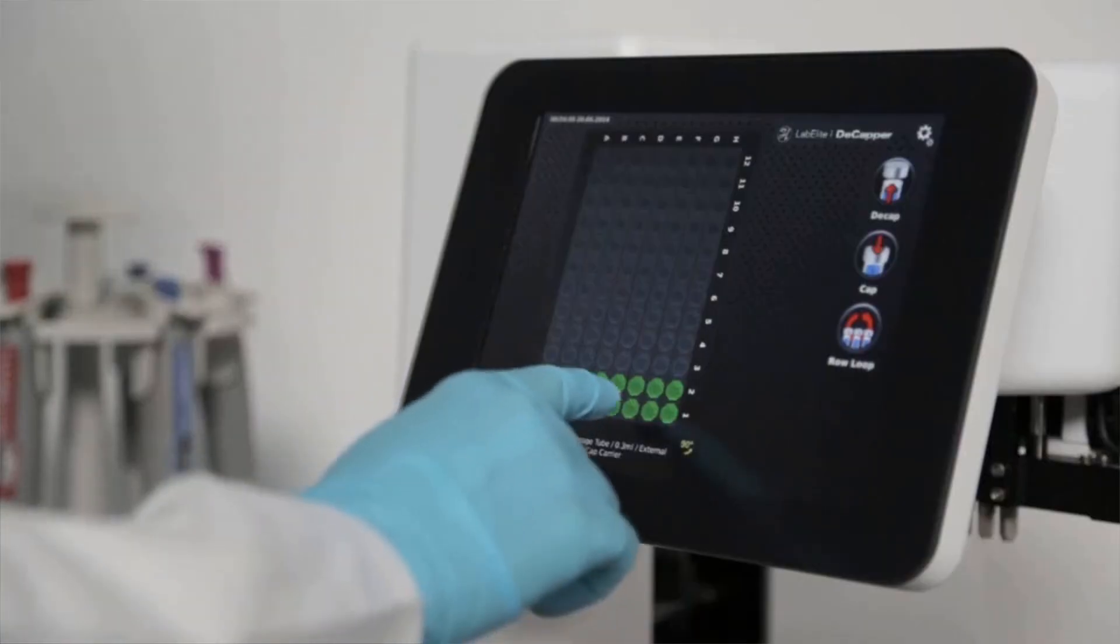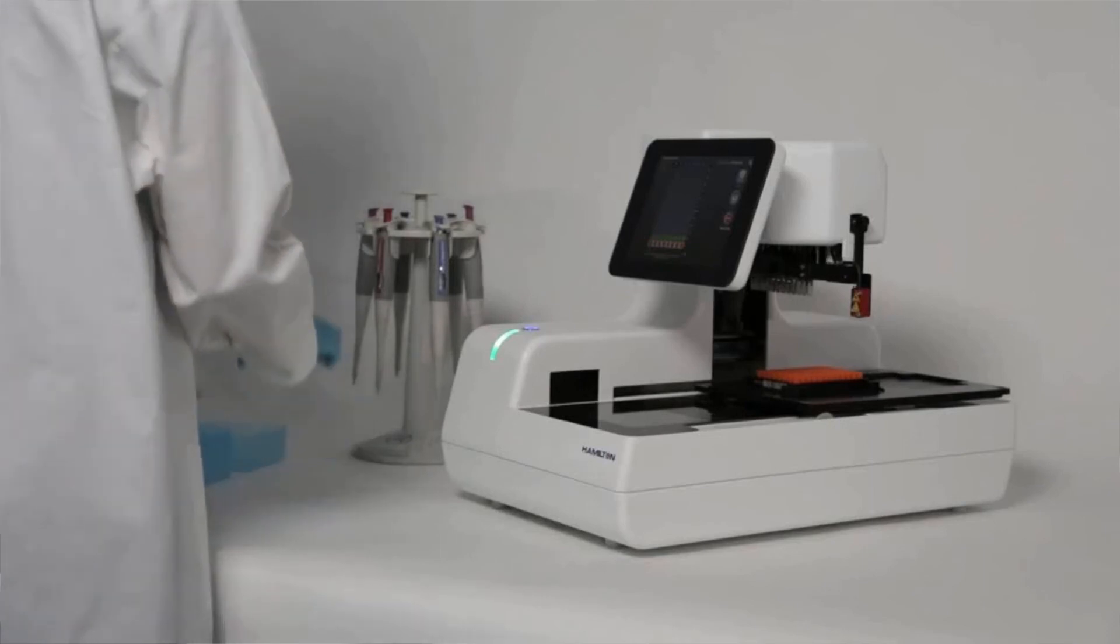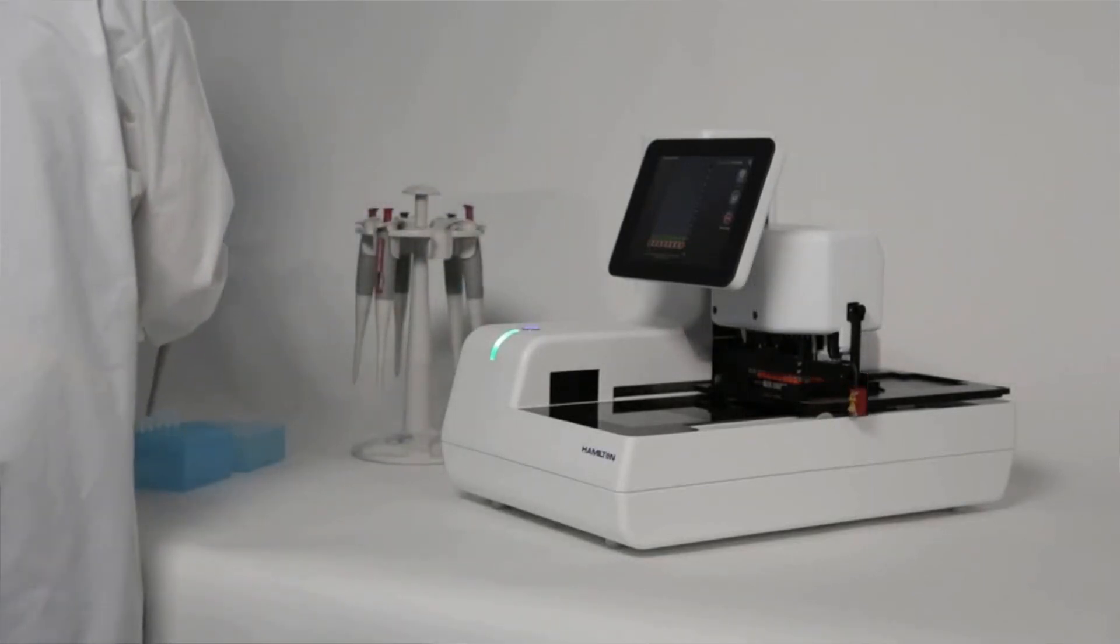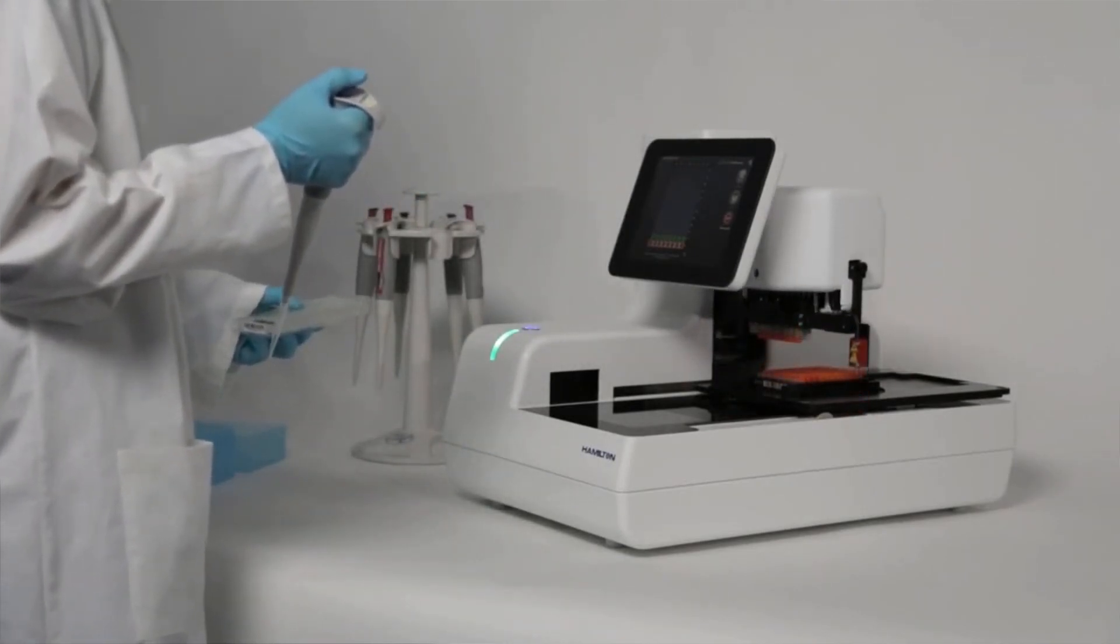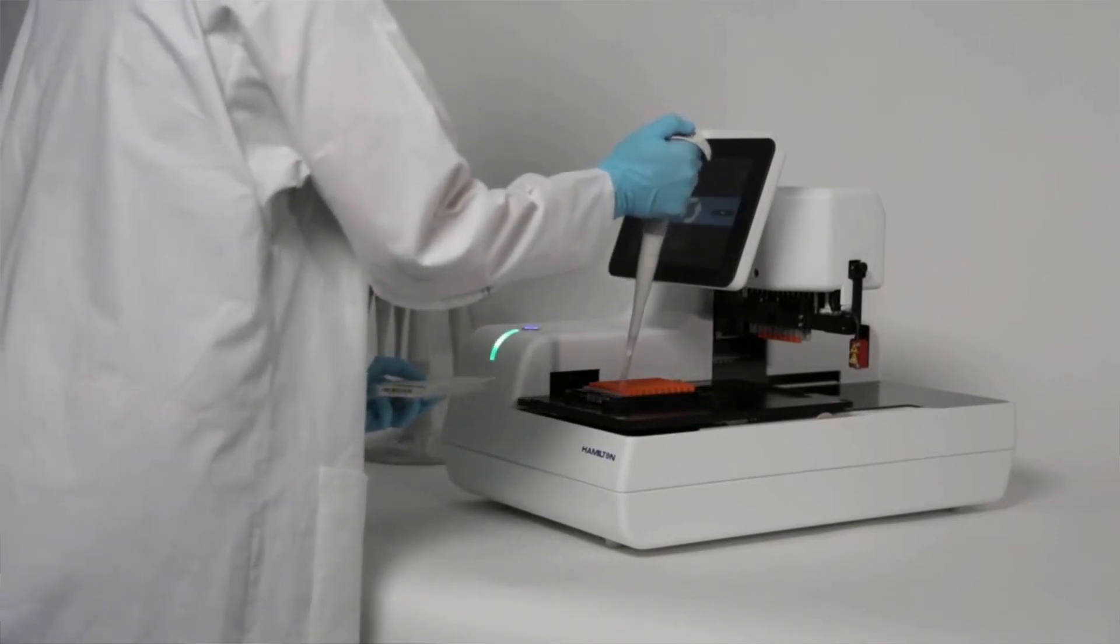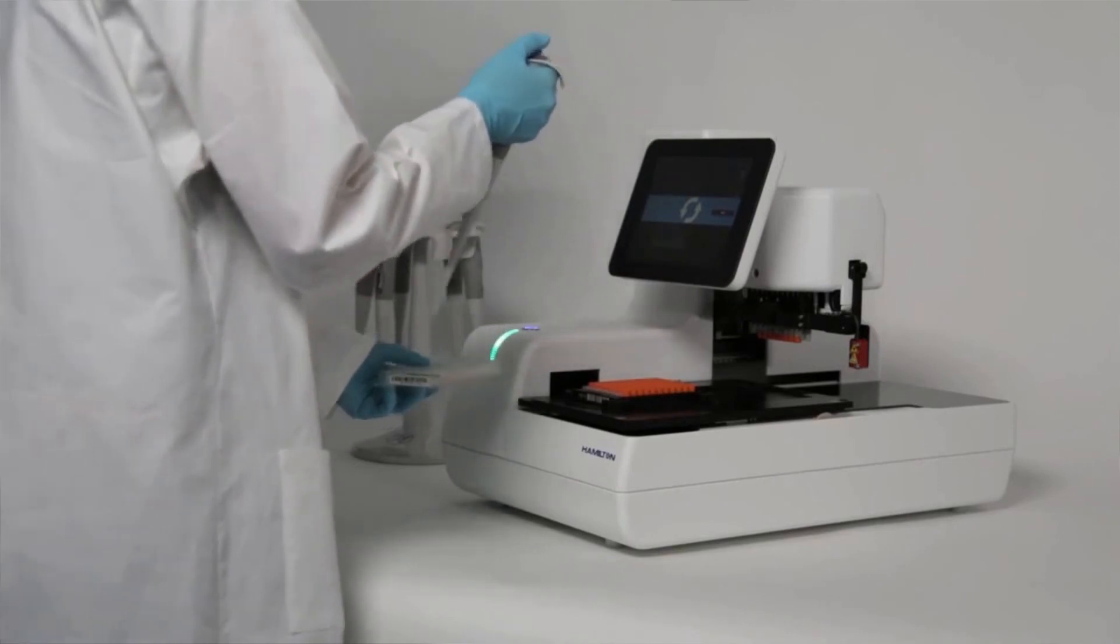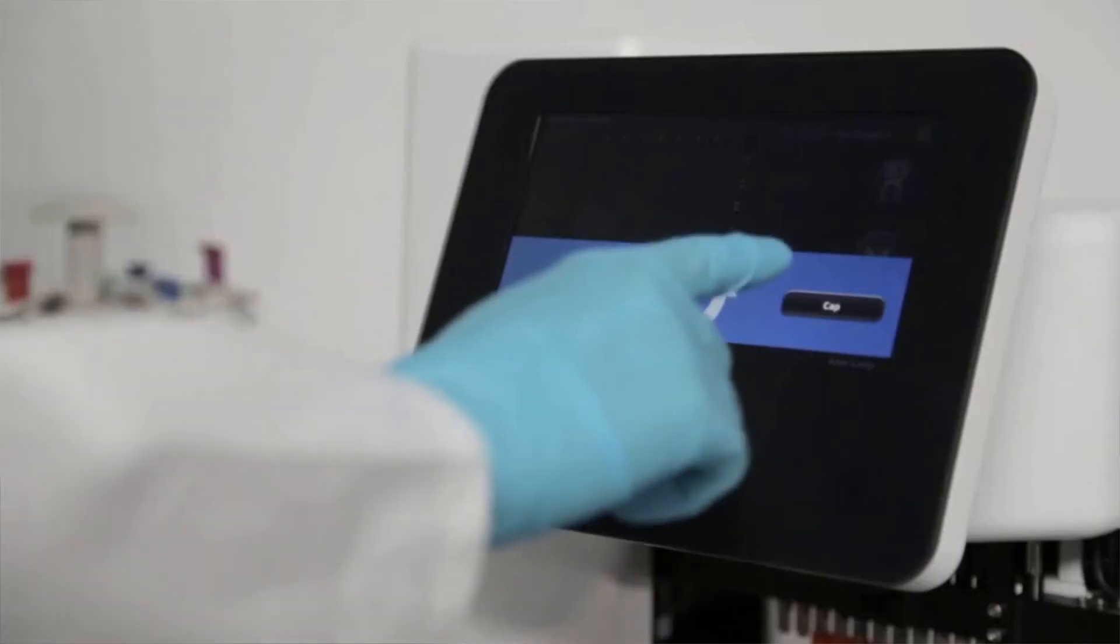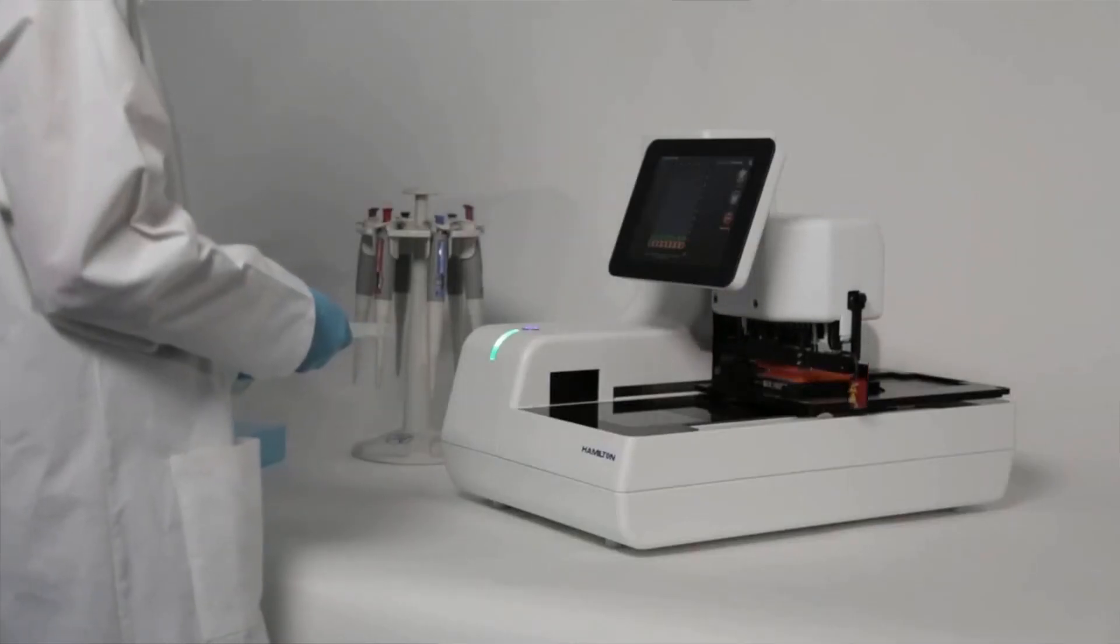Let's take a closer look at the row loop feature. In standard mode, you saw how the system decaps the tubes and holds the caps on the cap rack. With row loop, you can select specific rows and only open, then close, one row at a time, as the caps are held and not placed in the cap rack. Once a chosen row is decapped and perhaps manual pipetting is completed, you simply select cap and next to go on to the next row. This process continues for the remaining rows selected.